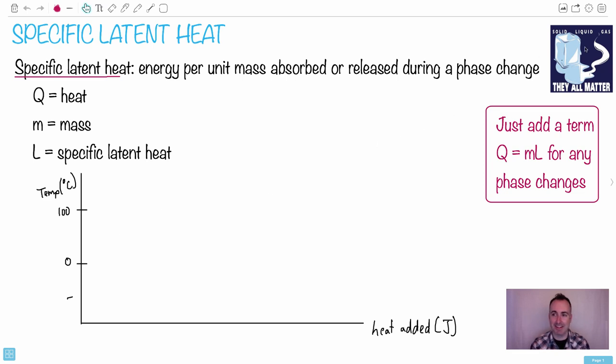That's why I love that little joke there: solid, liquid, gas, they all matter - get it? Because they're all forms of matter. So we have the formal definition: specific latent heat is the energy per unit mass absorbed or released during a phase change.